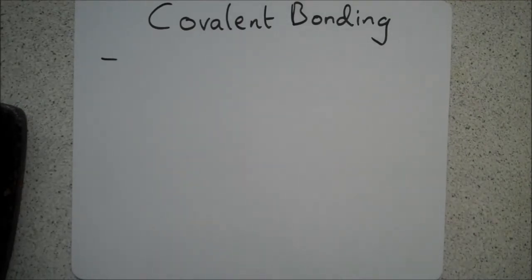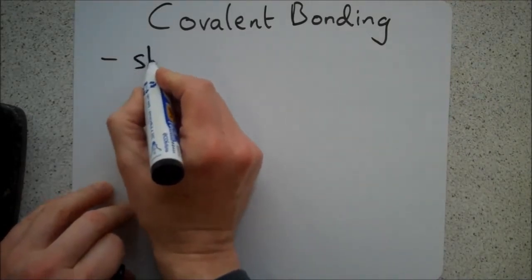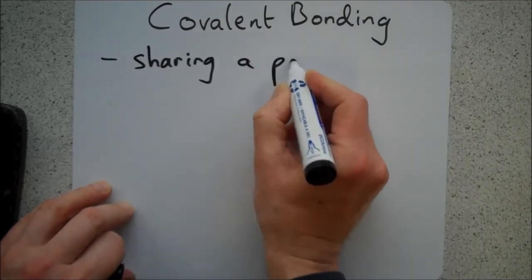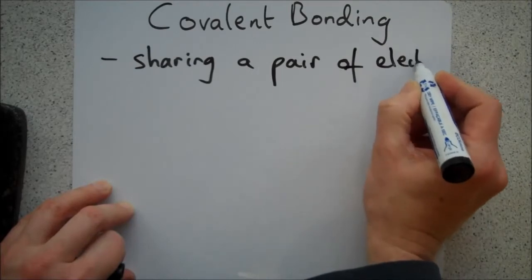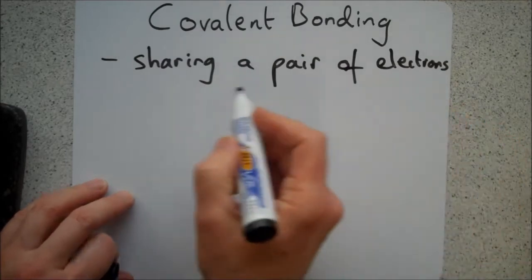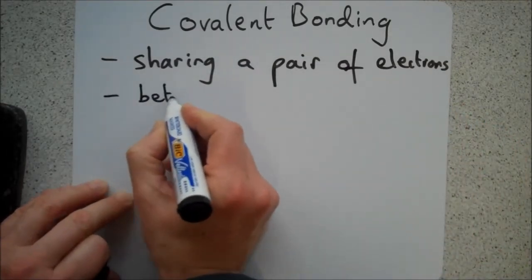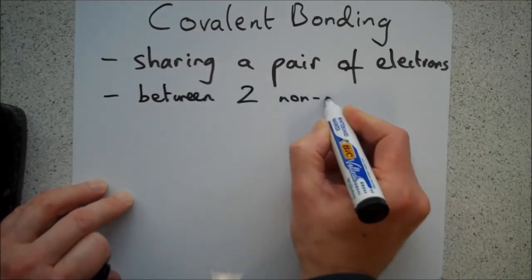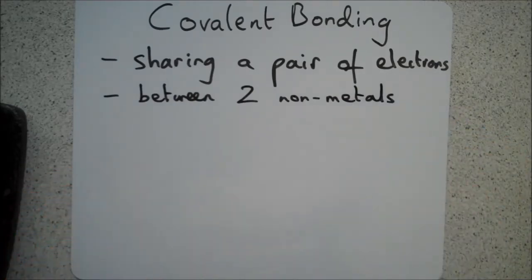Instead they have to share electrons. Covalent bonding is defined as sharing a pair of electrons — not just any number, but a pair of electrons — and it always happens between two nonmetals, or more than two nonmetals.